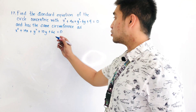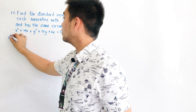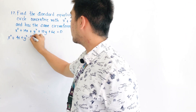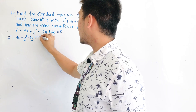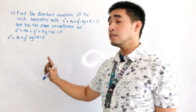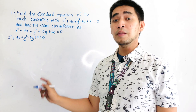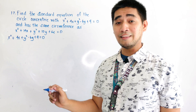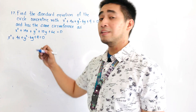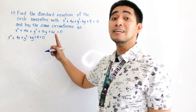For the first condition, we are given the equation x² + 4x + y² - 6y + 9 = 0. It states that the circle we need to find is concentric with this equation. When we say concentric, they share the same center. So all we have to do is get the center first.